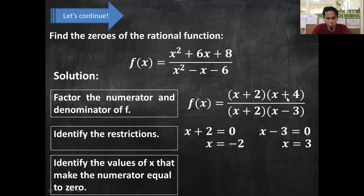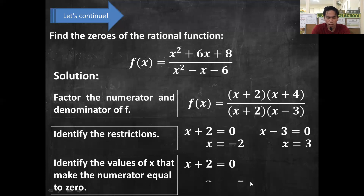Next, identify the values of x that make the numerator equal to 0. We will base our answer on our numerator, which factors as (x + 2) and (x + 4). Starting with x + 2 = 0: transpose positive 2 by subtracting 2 from both sides, giving x = −2. Next, x + 4 = 0: transpose positive 4 by subtracting 4 from both sides, giving x = −4.